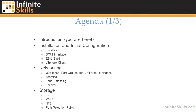Then we'll take a look at configuring networking including vSwitches, port groups, and VMkernel interfaces, teaming, load balancing, and network failover for setting up high availability and high performance network environments for virtual machines. In the storage section we'll also take a look at iSCSI, VMFS, the network file system, and path selection policy.